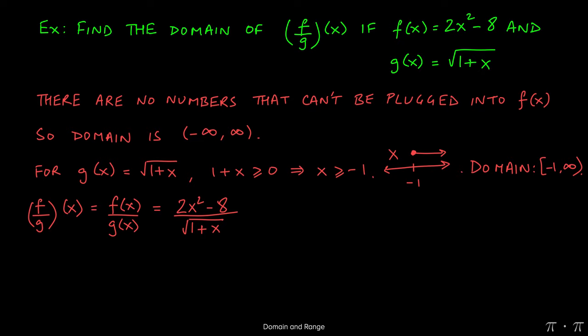Now in order to find the domain of this function, I have to make sure that the denominator is never 0 because it's a rational expression. And also I need to make sure that the inside of the radical always stays positive. So if it can't be 0 and it must be positive, the only option I have is to set 1 plus x to be greater than 0.